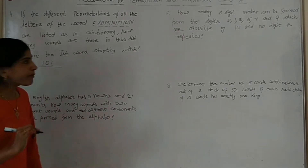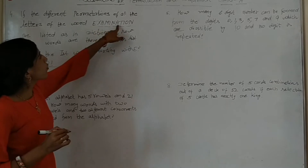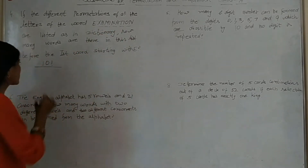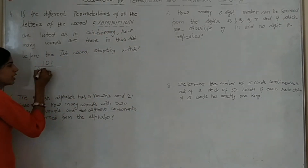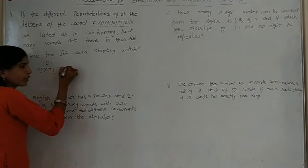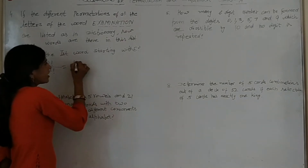By me — ab repetition kiske liye? A two times hai, I two times hai. So denominator mein 2 factorial into 2 factorial. Formula: 10! / (2! × 2!).